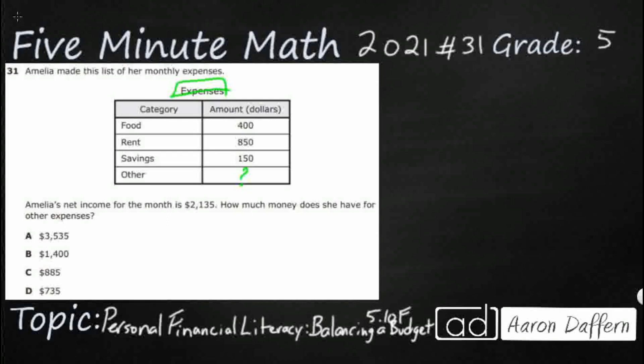So Amelia's net income is $2,135. How much money does she have for other expenses?